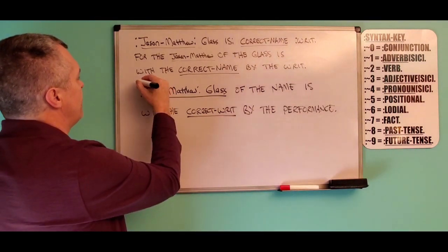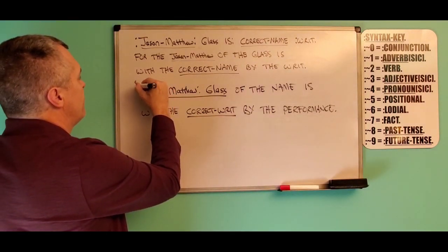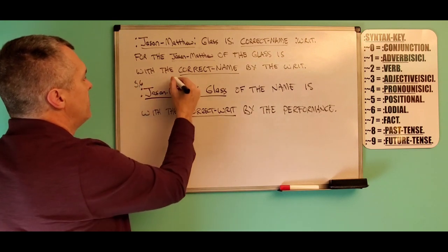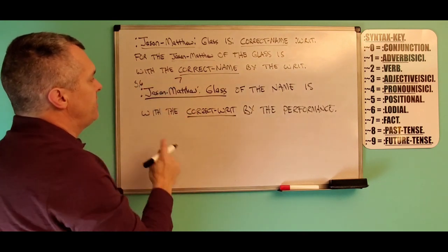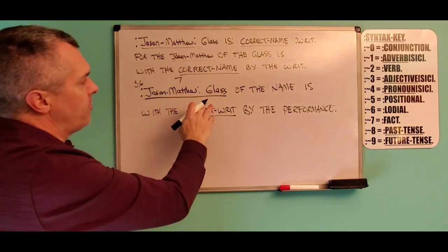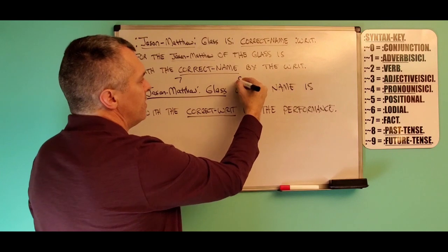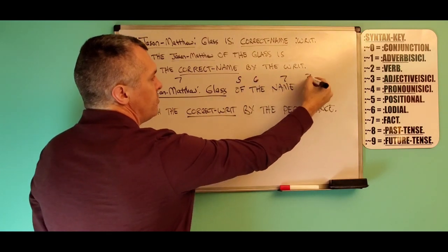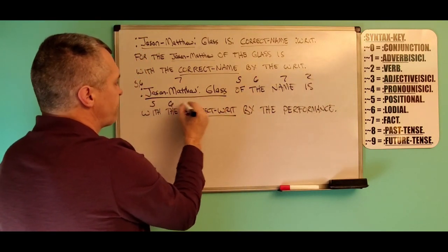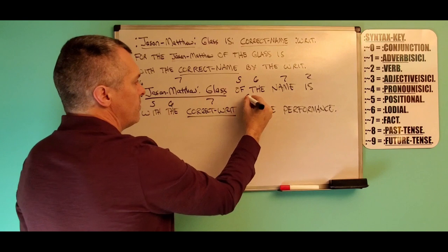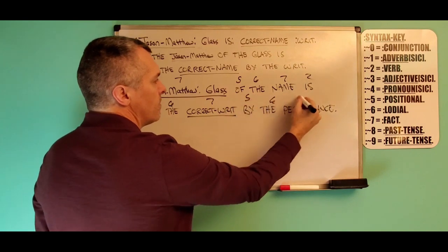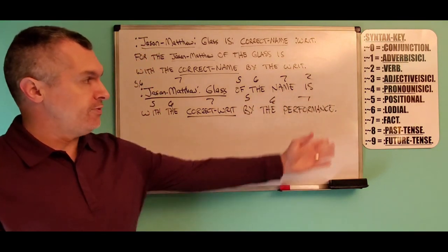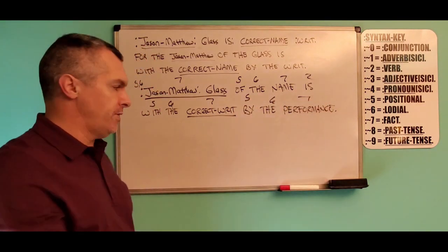If I were to syntax that, this whole underlined portion represents 'for the,' and then Jason hyphen Matthew colon glass would be a seven, and then a five, six, seven, two — so on and so forth with your syntax key.